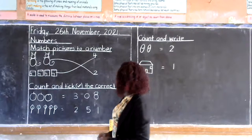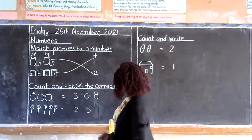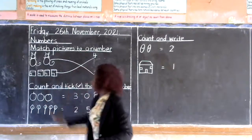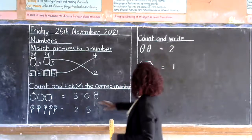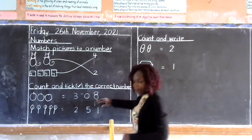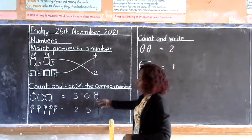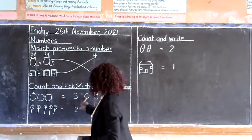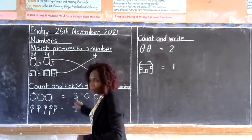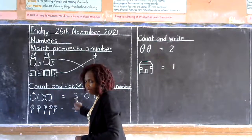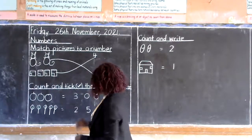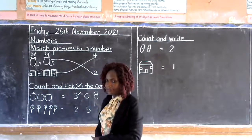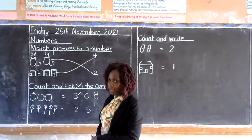Have you got me friends? Now friends, can we count the apples? One, two, three. We are going to look for number three here. Is this number three? Yes. So we tick number three like that. Have you got me?